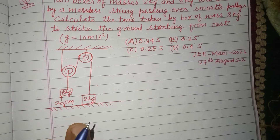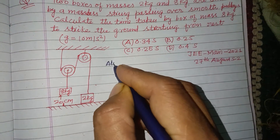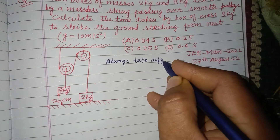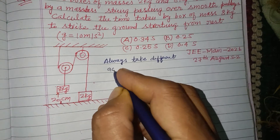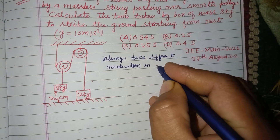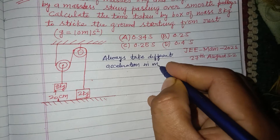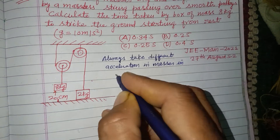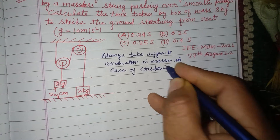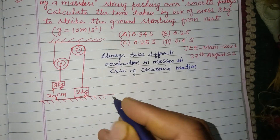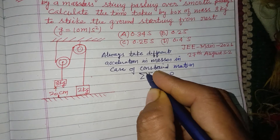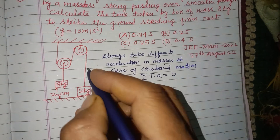This is a case of constraint motion, so always take different accelerations for different masses in the case of constraint motion. Also use sigma T·a equal to 0.